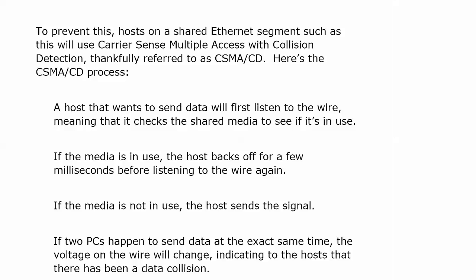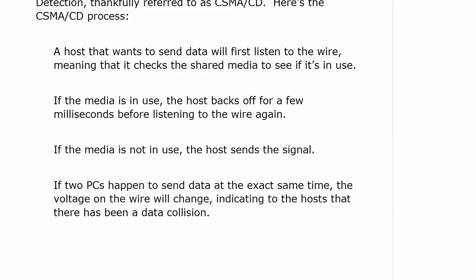Here's the CSMA/CD process in action. If a host wants to send data on a shared Ethernet segment, it does what we call listening to the wire — it's checking if the shared media is in use, detecting whether another host is already sending data. If the media is in use, the host backs off a few milliseconds and then listens to the wire again. If the media is not in use, the host then sends the signal. Now if two PCs happen to do that at the exact same time, the voltage on the wire actually changes, indicating to both hosts that what they just sent collided with somebody else's data.